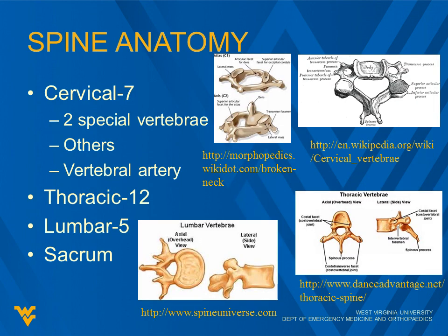The cervical spine has seven vertebrae. We have a couple of special vertebrae at the very top: the atlas or C1, where the skull sits, and C2 or axis, which provides for shaking the head no. The vertebral artery runs right through holes in the cervical vertebrae, which makes it especially dangerous at times. Thoracic has 12 typically, lumbar has five, although some people will have six. And then the sacrum is a group of fused vertebrae at the bottom.